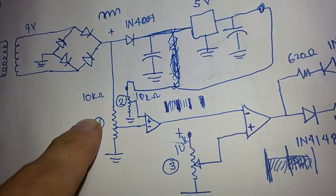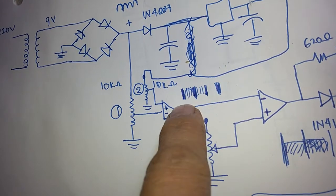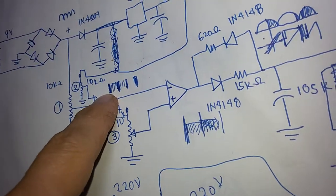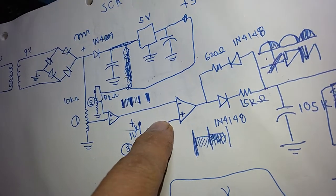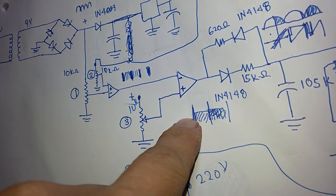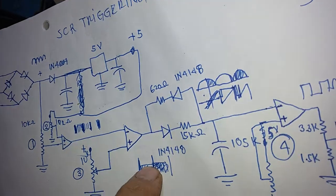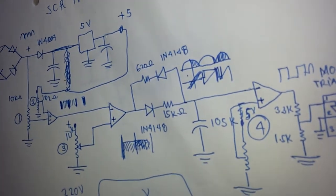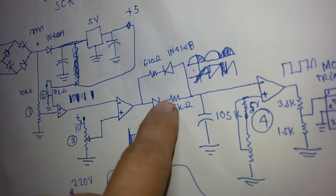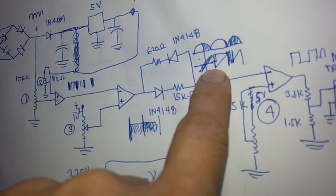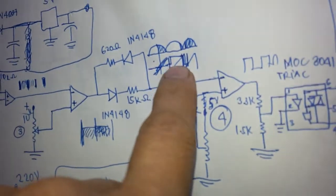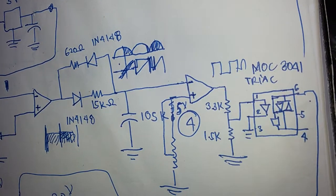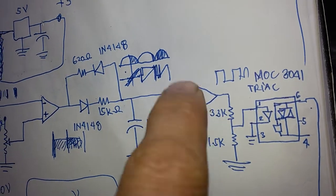From there it goes to our first stage comparator so that we can have an output of the zero voltage crossing detector. Then we feed this again to another comparator so that we can have an output of the square wave. Then we feed this to a sawtooth generator circuit — through this capacitor — so we are able to get the sawtooth, which we feed to the last comparator to get the pulses going to trigger our SCR.